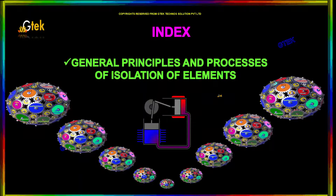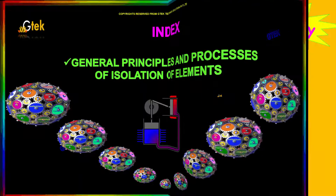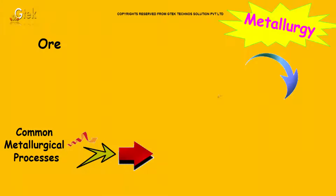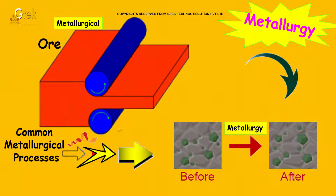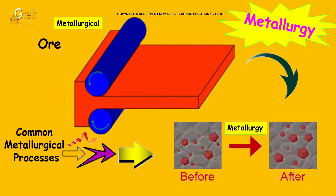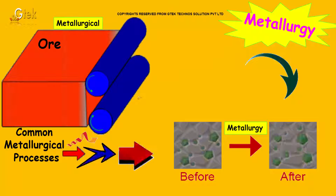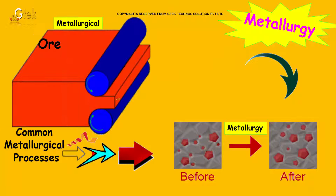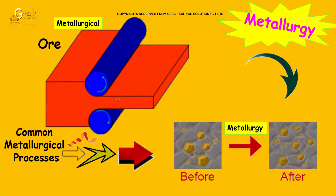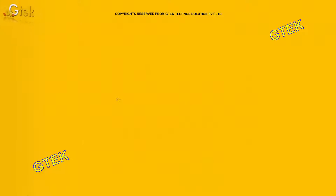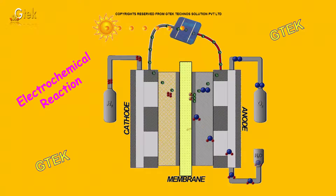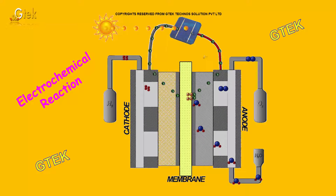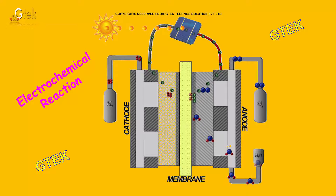Here is the index. We are going to talk about metallurgy — what are the common metallurgical processes involved? And we are also going to talk about electrochemical reactions — how the electrochemical reactions are happening.